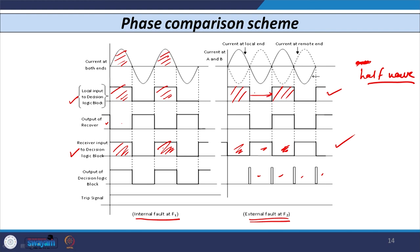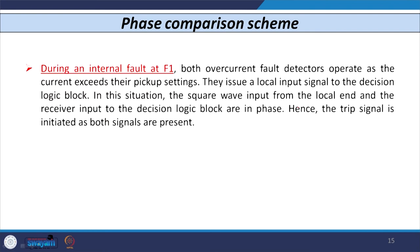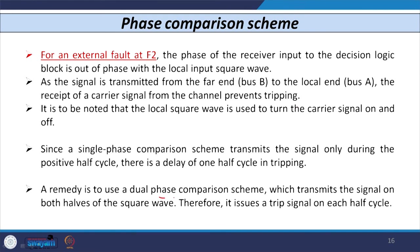That is why this type of scheme is known as a single-phase or half-wave phase comparison scheme, because the signal is transmitted every half cycle — introducing a half-cycle delay. To rectify this, a dual phase comparison scheme can be used, where signals are transmitted for every positive and negative half cycle. We started our discussion with different types of pilot signals (radio frequency, microwave, fiber optic, satellite), then the wire pilot relaying scheme and its limitations, then the carrier current protection scheme including the phase comparison scheme. The directional comparison scheme will be discussed in the next class.